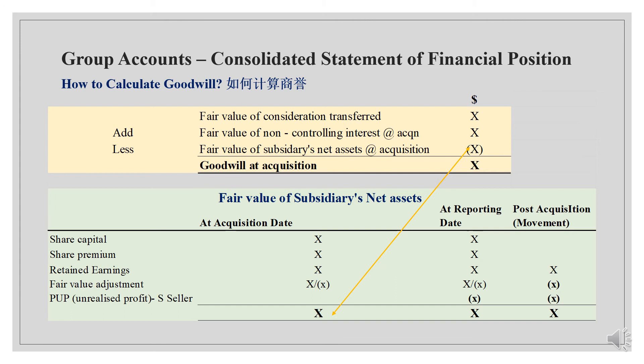子公司在收购日的净资产公允价值等于子公司的所有者权益，包括：股本、股本溢价，以及子公司在收购日的留存收益 (pre-acquisition retained earnings). 如果子公司的公允价值等于净资产值，合并报表不需调整；如果公允价值大于净资产值，合并报表需要调整. 未实现利润 (unrealised profit) 的处理将在下面的视频中详细讲解.